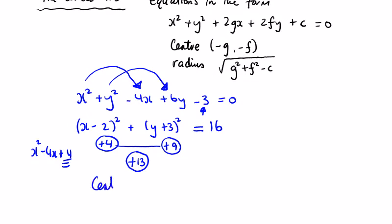We can now read off the centre: change the sign of the x-bracket value to get 2, and change the sign of the y-bracket value to get minus 3. And r squared is 16, so r equals 4. You can also do it very simply: 2g is the coefficient of x, so take the number minus 4, divide by 2 to get minus 2, then change the sign to get plus 2. Divide 6 by 2 to get 3, then change the sign to get minus 3. Really simple way to do it.